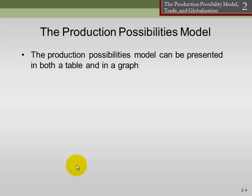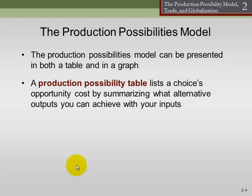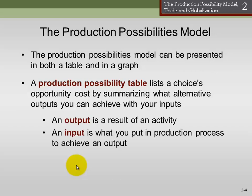In this introductory lecture to Chapter 2, I'm going to throw a lot of concepts at you — essentially, we're going to be defining terms. The first term we need to define is the production possibilities model. The production possibilities table is a list of choices that summarizes the opportunity cost of each alternative by listing out the amounts of output you can achieve with particular inputs. An input is the raw material — the stuff you start with that you use to make whatever it is you're producing. The result of a productive activity is your output.